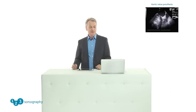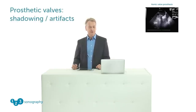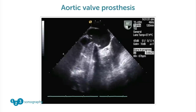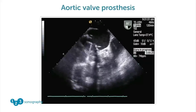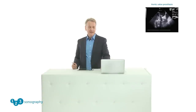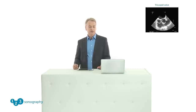Another problem involves prosthetic valves — we also have artifacts such as shadowing of the left ventricle. A mitral valve prosthesis can shadow the aortic valve, and an aortic valve prosthesis can shadow distal parts of the aorta. If we combine transthoracic and transesophageal echo, we can see both sides of the valve. Also, the tricuspid valve is more difficult to assess with TEE than from a transthoracic approach.